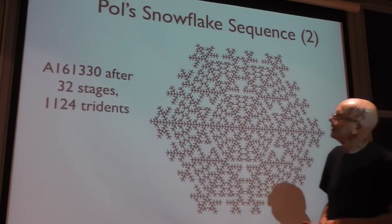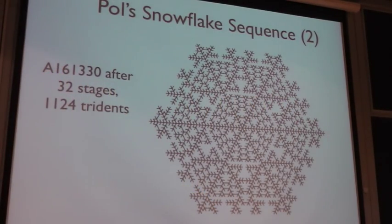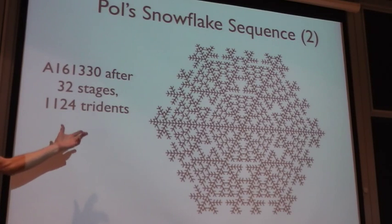And after you get to 32 generations it looks like this. So this is appropriate for the Christmas season. After 32 generations you have one, one, two, four of these two tridents. And the sequence is how many do we have after n generations? And the answer is we don't know.